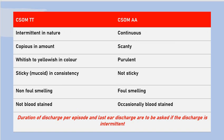Duration of discharge per episode and last day of discharge are to be asked if the discharge is intermittent, because the discharge might last for five to seven days in usual conditions and occasionally for longer duration. The last day of discharge is important to stage the activity of disease. The disease might be active, quiescent, inactive, or healed according to the time of last discharge. When the discharge has not been present for the last six months, the disease is supposed to be inactive.